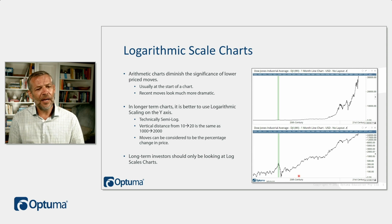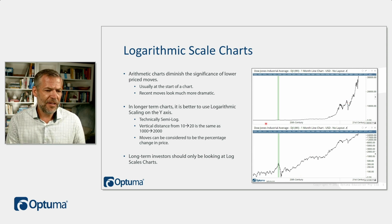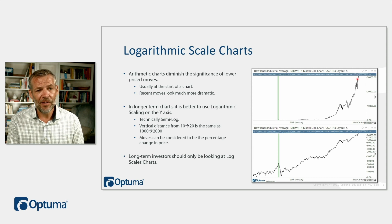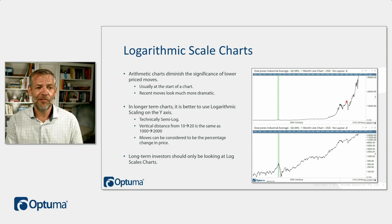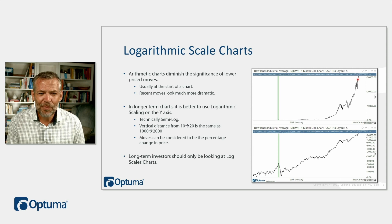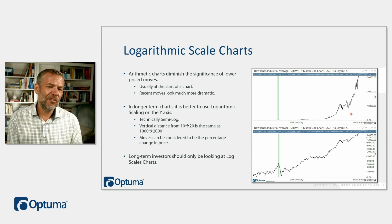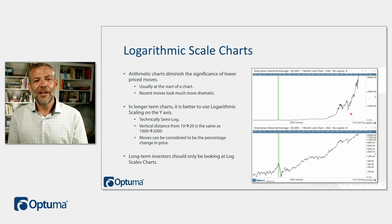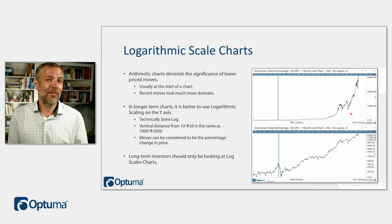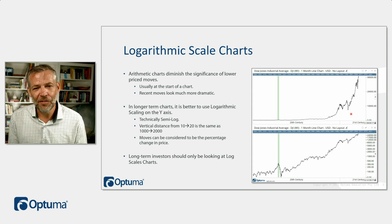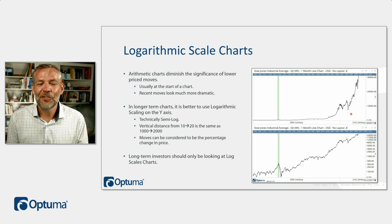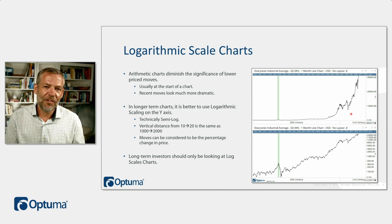Logarithmic scales — here's an example that really highlights this. This is the Dow since 1900, and on an arithmetic scale the COVID crash looks disastrous, even worse than 2007's global financial crisis. But consider this: if you have a dollar and lose 50 cents, that's a 50% loss. If you have a hundred dollars and lose 50 cents, that's half a percent. An arithmetic chart really doesn't help us when we're trying to look at returns.